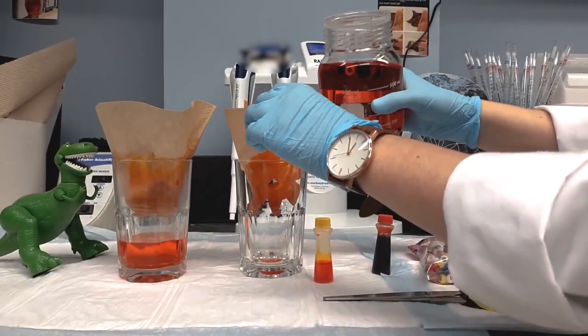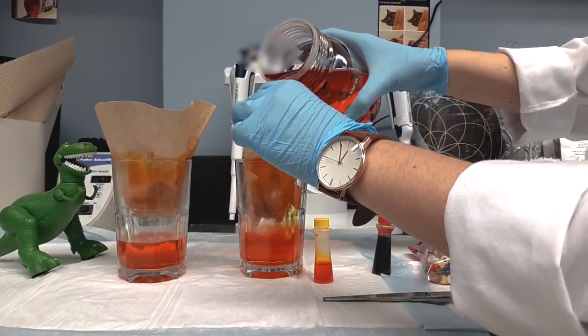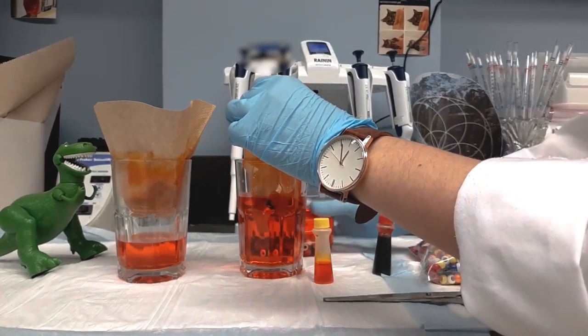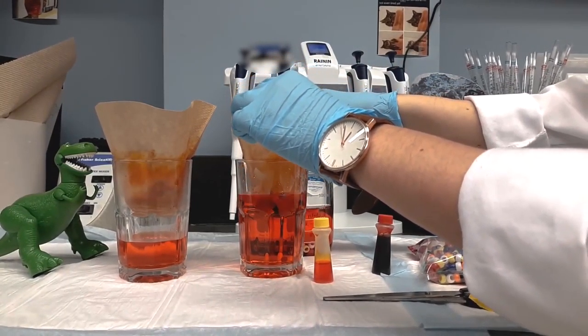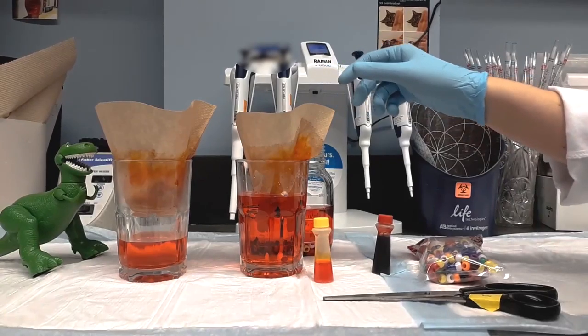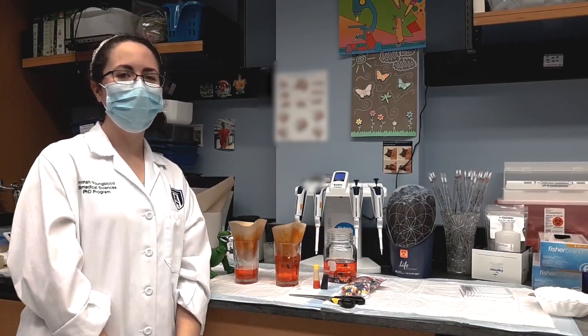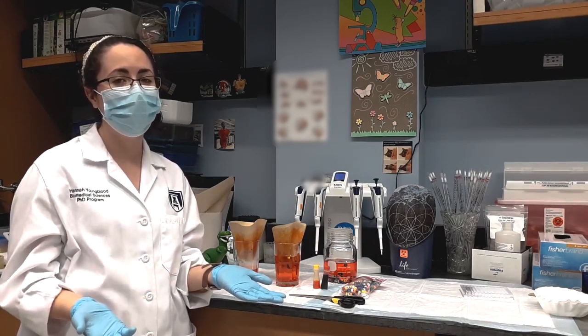Meanwhile, our diseased kidney, our sick kidney, it doesn't filter the blood quite as well. Both proteins and waste go into the urine this time. The kidney doesn't keep the proteins like it should. Now that we know how the kidneys work, Lindsey's going to show us how we tell the sick kidney from a healthy kidney in lab.